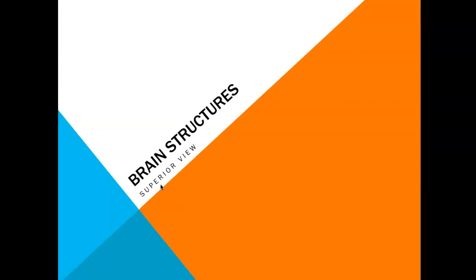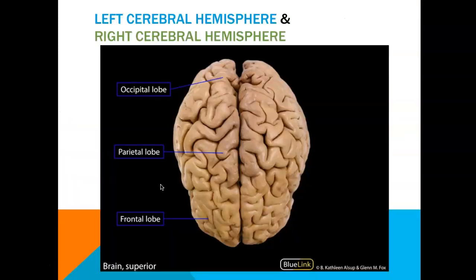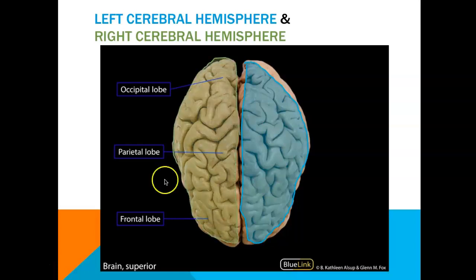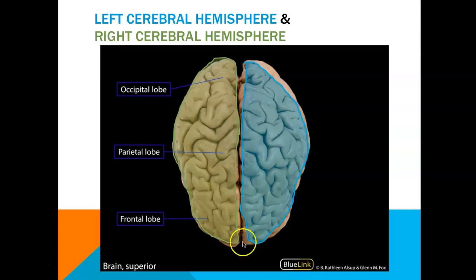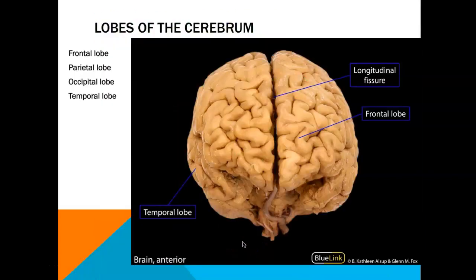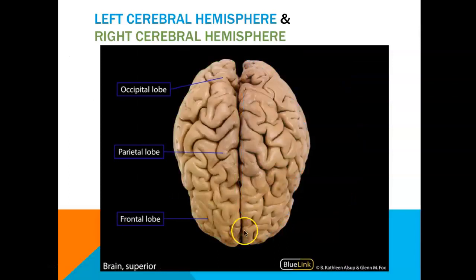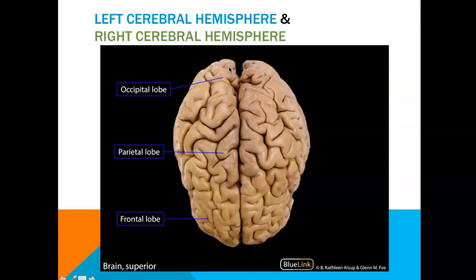First we'll begin with the superior view of the brain. Here we can see that the brain is divided into a left cerebral hemisphere and a right cerebral hemisphere, and soon we will talk about the space in between called your longitudinal fissure. On the brain we can also see a couple of different lobes: we have our frontal lobe, the parietal lobe, and the occipital lobe, all named based on the bones that overlie them.